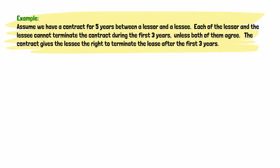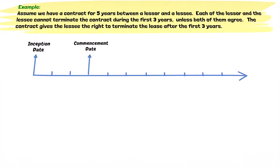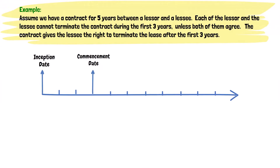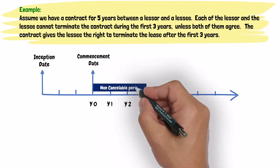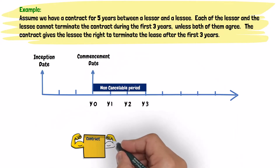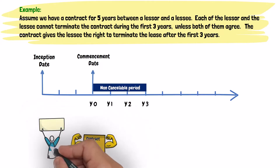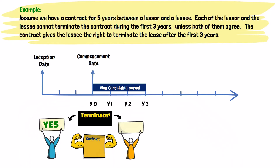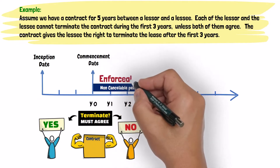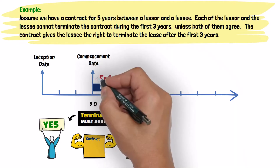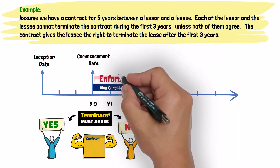The contract gives the lessee the right to terminate the lease after the first three years. The first three years of the contract is the non-cancellable period of the lease, as neither party can terminate the contract during those three years unless both of them agree. Therefore, the lease is enforceable during the first three years of the contract.